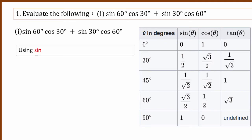Sin 60 degrees is root 3 by 2. Sin 30 degrees is half.